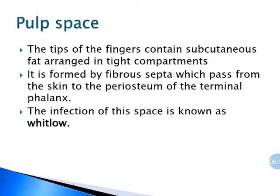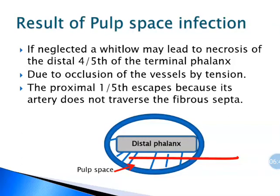The infection of the pulp space is known as whitlow. If neglected, whitlow may lead to necrosis of the distal four-fifths of the terminal phalanx, due to occlusion of the vessel by tension in the pulp space infection. Only the proximal one-fifth escapes because its artery does not traverse the fibrous septa.